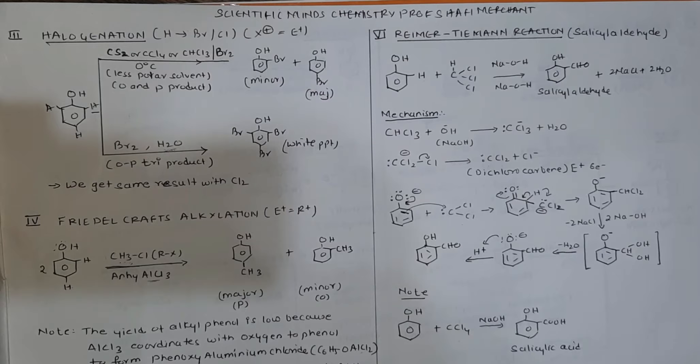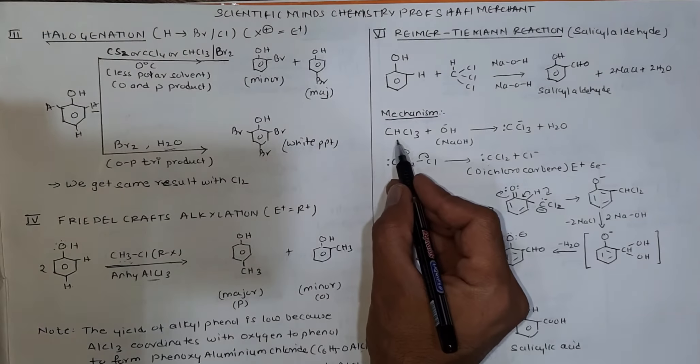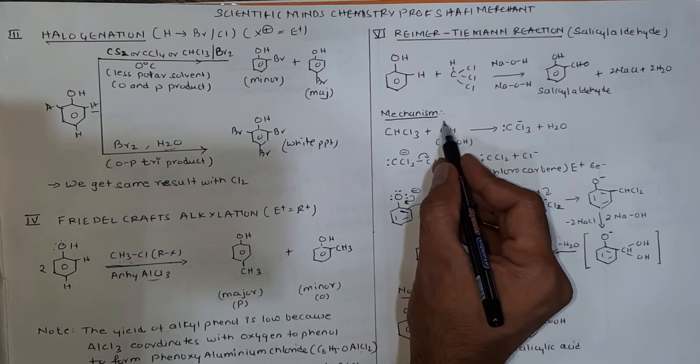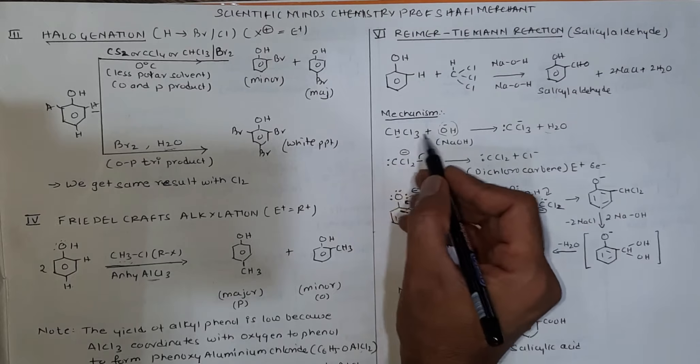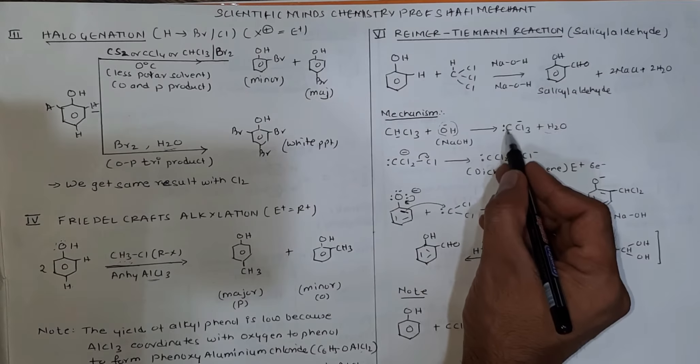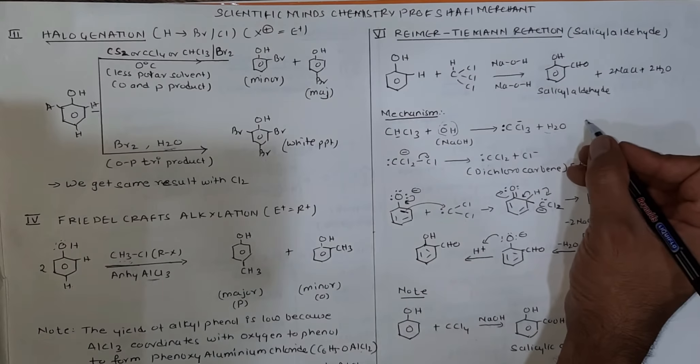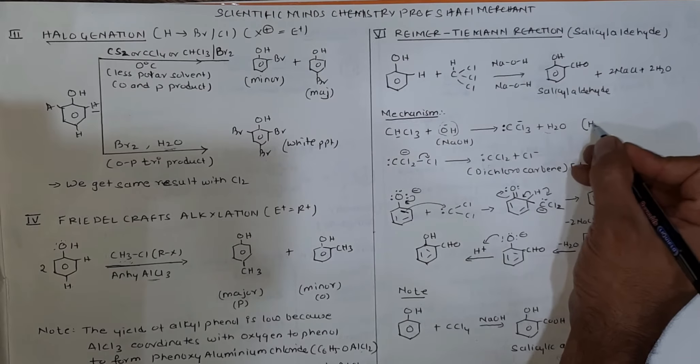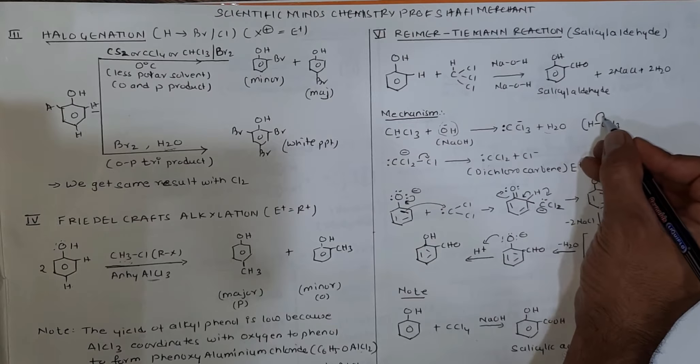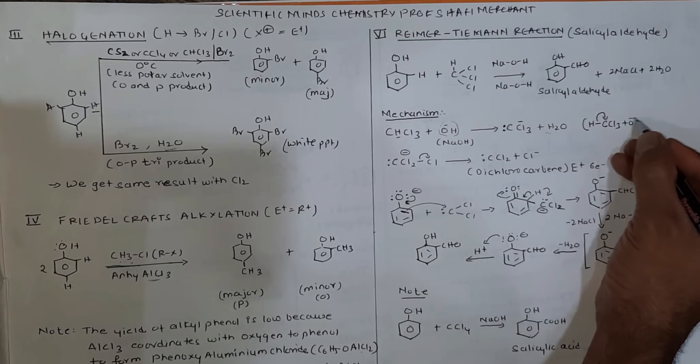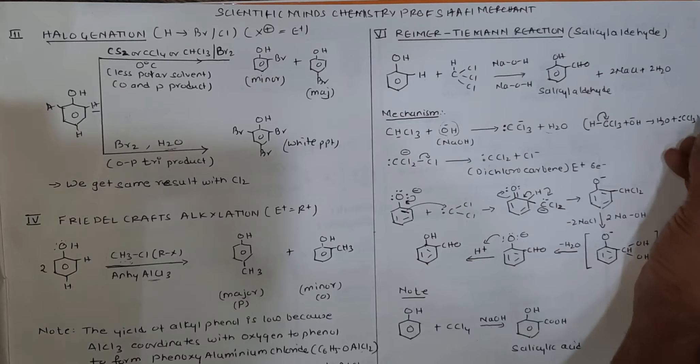The mechanism for Reimer-Tiemann reaction: It's an electrophilic substitution. Chloroform reacts first with NaOH. The OH- removes H from chloroform. The lone pair shifts to the carbon atom. Since CCl3 is more electronegative, it pulls the electron pair in presence of base to form H2O plus CCl3- with a lone pair.